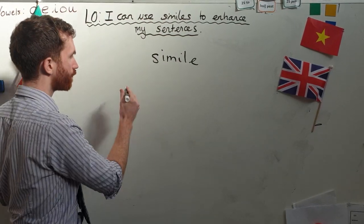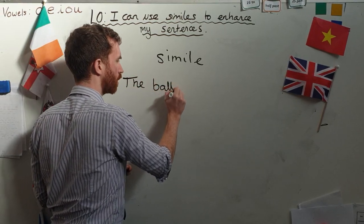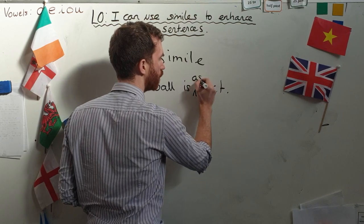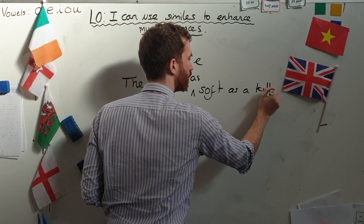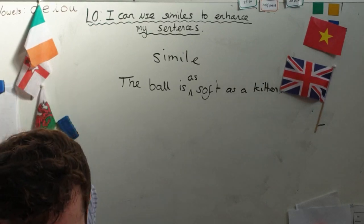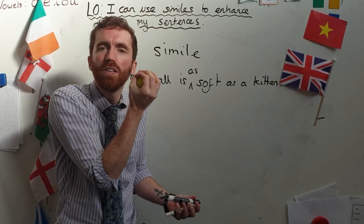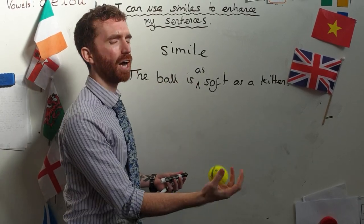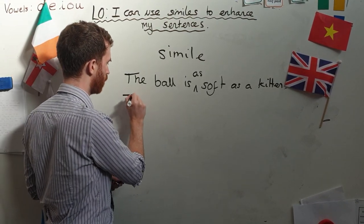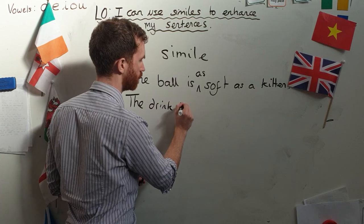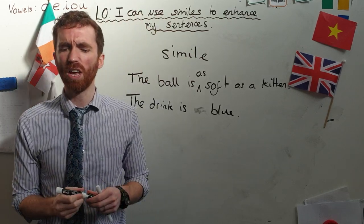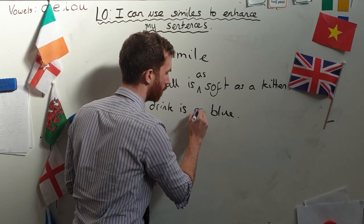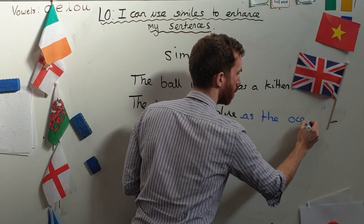I might say the ball is soft. You're thinking, how soft? What sort of soft? Well, it's as soft as a kitten. The ball is as soft as a kitten - and suddenly it goes from just being any old soft to being this cute, lovely, nice soft. Now I've got a drink. The drink is blue. You're thinking to yourself, how blue is that drink? So, the drink is as blue as the ocean.